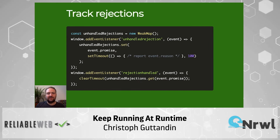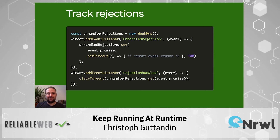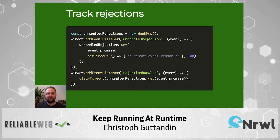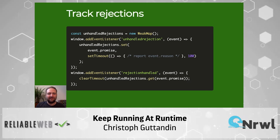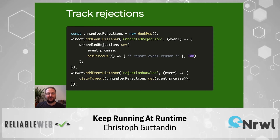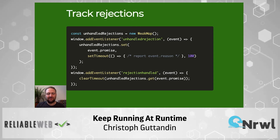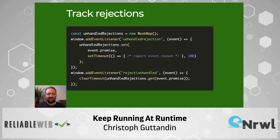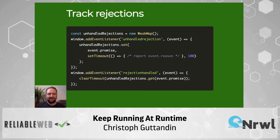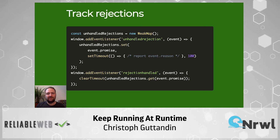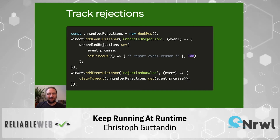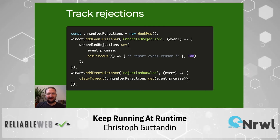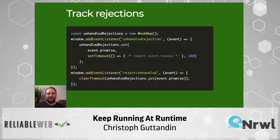Another thing which often gets forgotten, especially when doing error tracking manually, is to track rejections — these are errors thrown by promises and they work a little differently. Technically it's possible to add a catch handler to a rejected promise any time after it actually got rejected, so the browser never knows if an unhandled rejection may or may not get handled in the future. As a result, the browser fires two types of events: one when it detects a possibly unhandled rejection, and another one in case it gets handled after the fact.